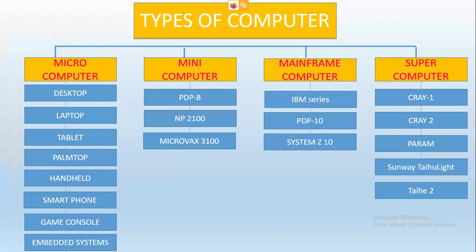In minicomputer, the examples are PDP-8, NP-2100, and Microwax-3100. The examples of mainframe computers are IBM series, PDP-10, and System Z-10. Then for supercomputers: Cray-1, Cray-2, Param, Sunway-Light, Tahoe-Light, and Tahoe-2.